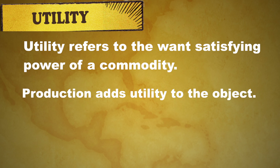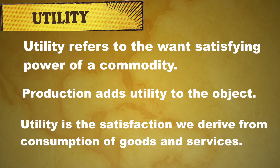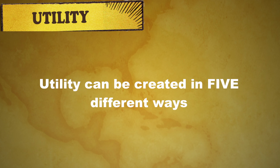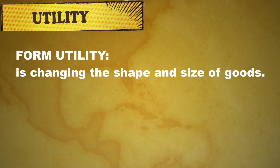Production adds utility to the object. We have already discussed the concept of production. The reason why production is important in the economy is that production will add utility. Utility is the satisfaction that we derive from the consumption of goods and services. Through production, utility can be created. There are five different types of creation of utility. The first one is form utility. Form utility is changing the shape and size of goods — for example, a table made from a piece of wood.